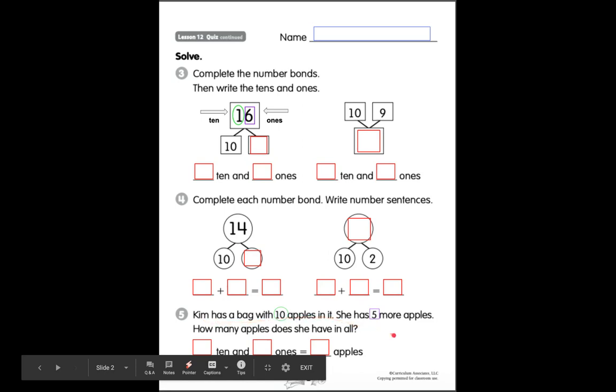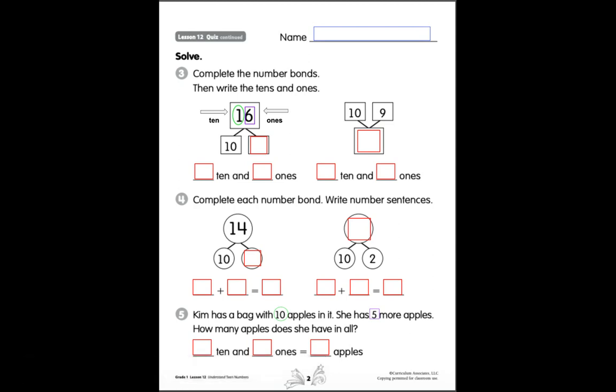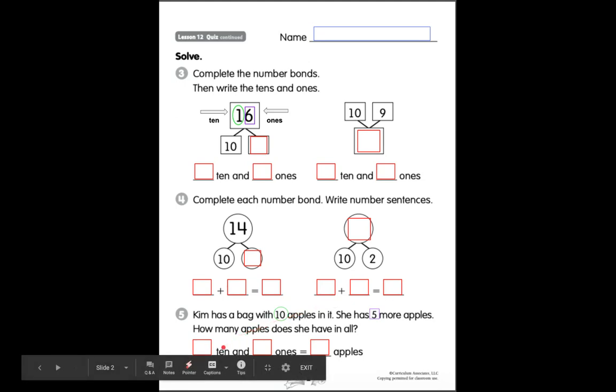Number five says, Kim has a bag with ten apples in it. She has five more apples. How many apples does she have in all? Ten apples in it and five more apples. That's how many tens and how many ones equals how many apples.